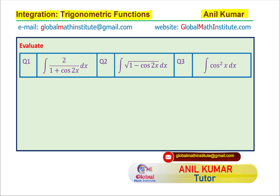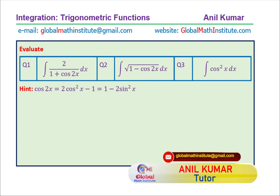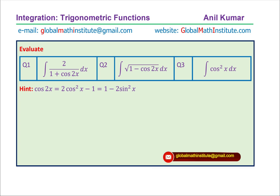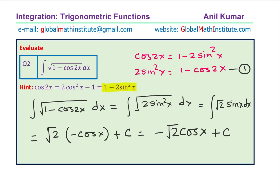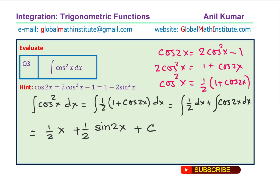The only strategy we used was to simplify using the trigonometric identities and then work out the solution. I hope you understand and appreciate this. These are the three solutions. Feel free to write your comments and share your views. If you like and subscribe to my videos, that would be great. And in case you want to learn from me directly, send an email to this address. Thanks for your time and all the best.